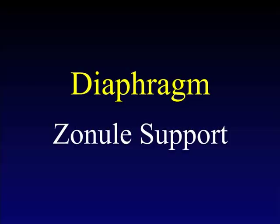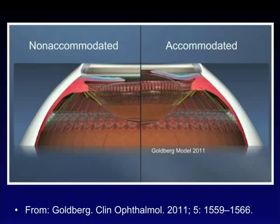Regarding the diaphragm and zonular support — if we look at Goldberg's drawing, there is no real evidence for vitreous support, and the relaxation of the zonule in the accommodated state is offset in his concept. This is based largely on many of Marianne and Croft's and Paul Kaufman's experiments demonstrating what is happening in the area around the lens.